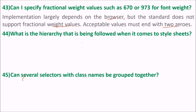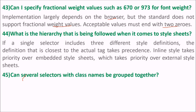What is the hierarchy followed when it comes to stylesheets? If a single selector includes three different style definitions, the definition closest to the actual tag will take precedence. Inline style takes priority over embedded stylesheets, which takes priority over external stylesheets. Just like if somebody is right in front of you versus calling from outside — you give preference to the closest one.